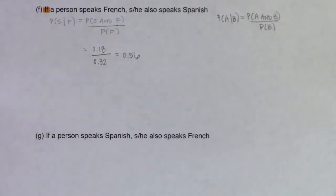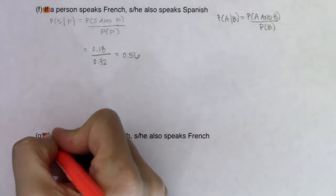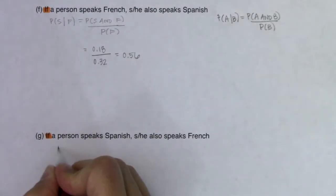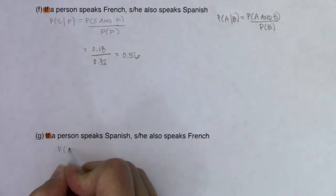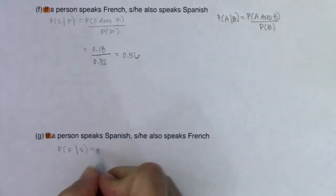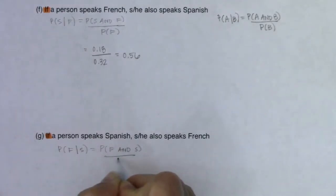I would recommend pausing for a moment to see if you can do Part G, then unpause and see if you match what I've got. For G: what is the probability that if a person speaks Spanish, he or she also speaks French? This time the condition is that the person speaks Spanish, not French. So I'm going to switch the order — I want the probability of F given S.